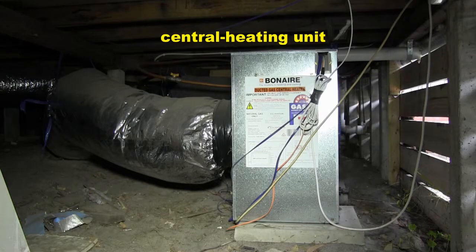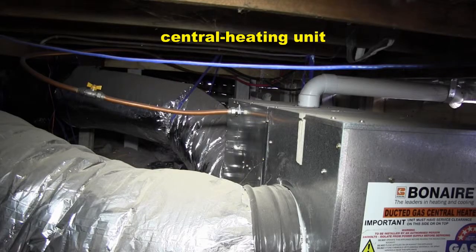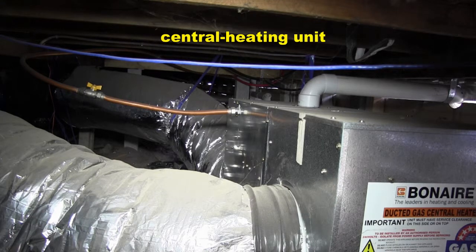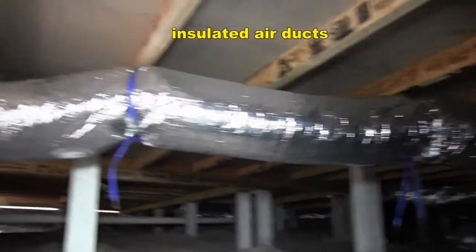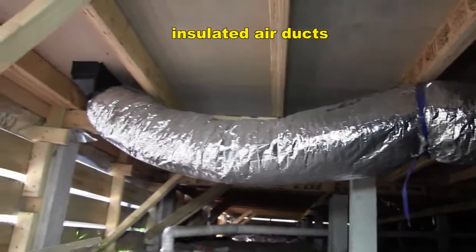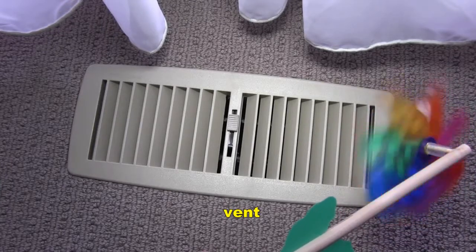Inside this central heating unit under this house, natural gas is being burned to warm up the air being pumped through the unit. A large fan blows the warm air through these insulated air ducts and it comes out of these vents. The warm air then heats up the room.